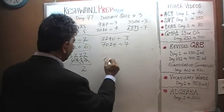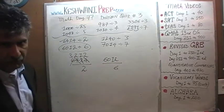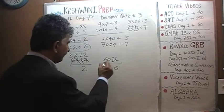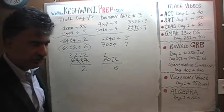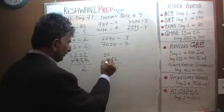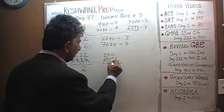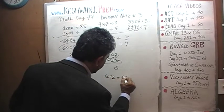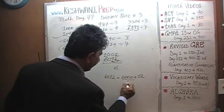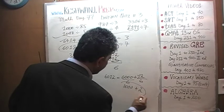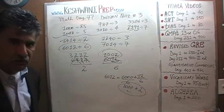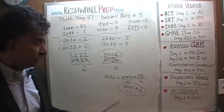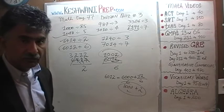6,012 divided by 6 is also a very simple process because 6 is divisible by 6 and 12 is divisible by 6. How many 6s does 6 have? One. How many 6s does 0 have? None. How many 6s does 1 have? None — that 1 joins the 2 to become 12, and 12 has two 6s. The answer is 1,002. By visual inspection, we should have been able to tell: 6,000 has one thousand 6s, and 12 has two 6s — so the answer is 1,002.